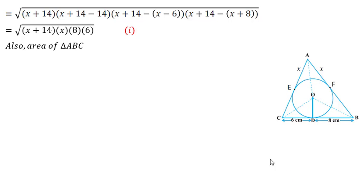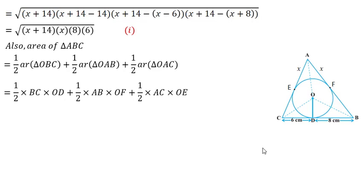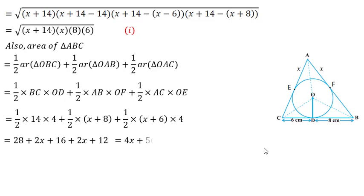Area of triangle ABC also equals half of triangle OBC plus half of triangle OAB plus half of area of triangle OAC. Putting in the formula half × base × height: that is half × BC × OD + half × AB × OF + half × AC × OE. We have values for BC, AB, AC, OD, OF, and OE. OD, OE and OF are all radii, so their value is 4. On simplification we get the area as 4X + 56.